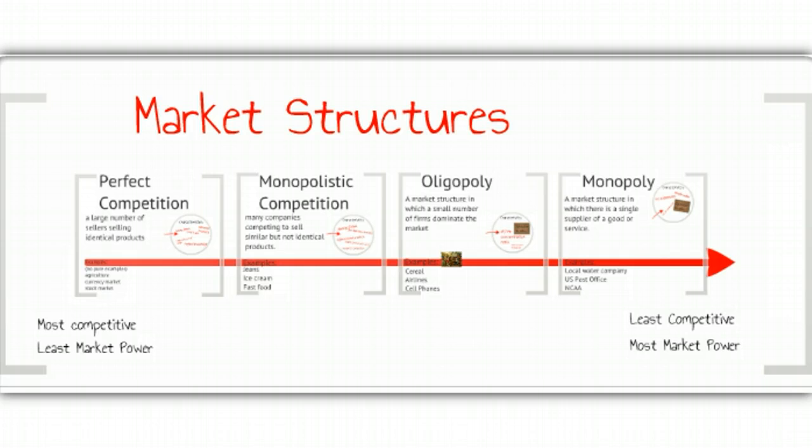Economists use something called market structures to identify the common characteristics of various markets and to measure how competitive they are. We're going to talk today about four market structures that range from very competitive and have very little market power to those that are not competitive at all and have the most market power. Let's start by talking about perfect competition.